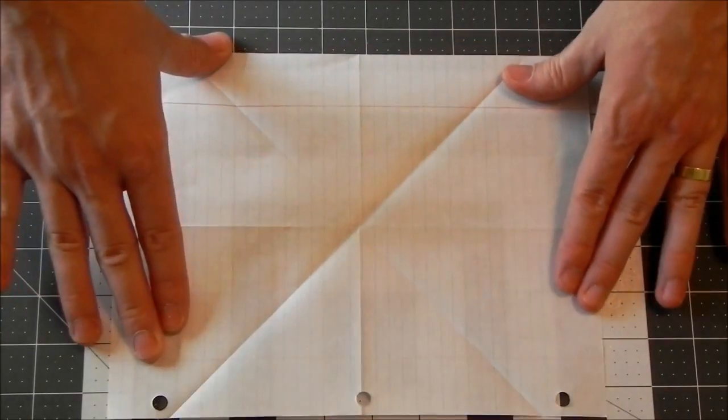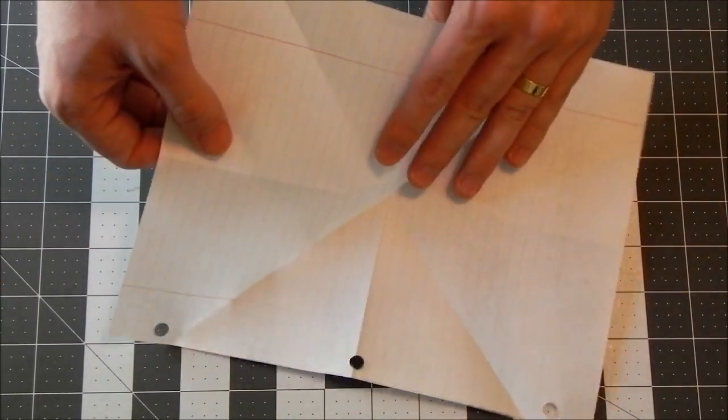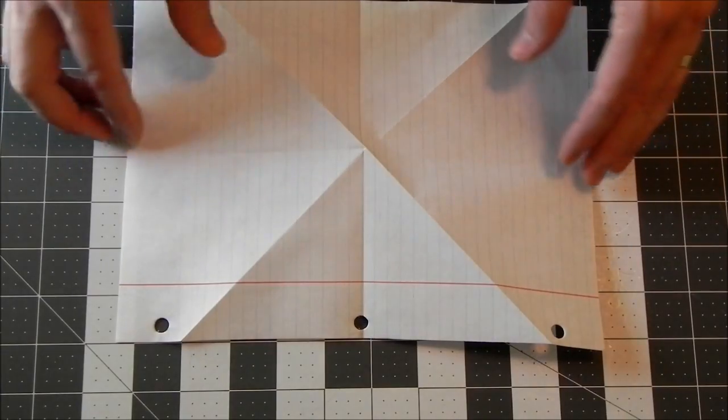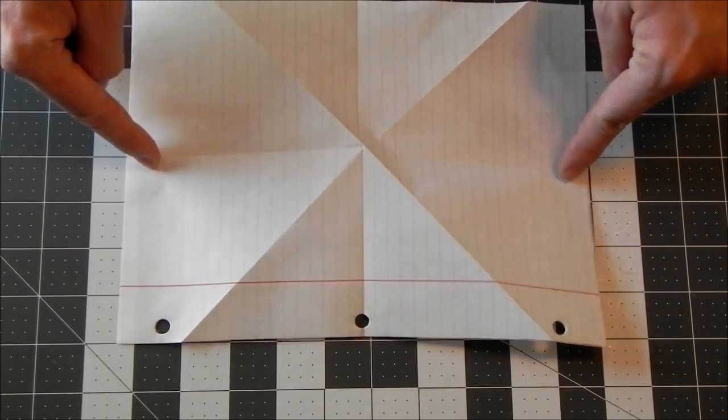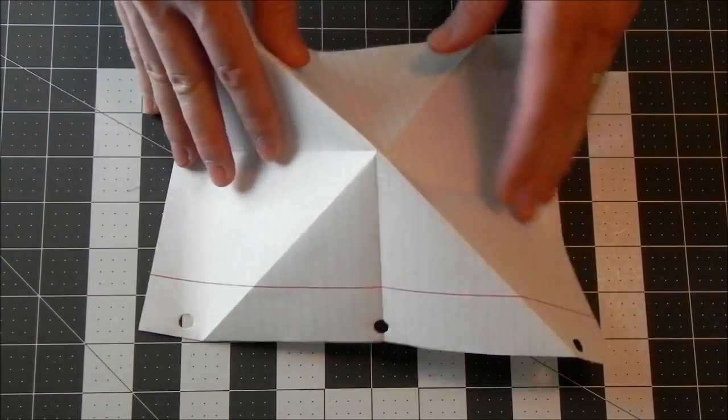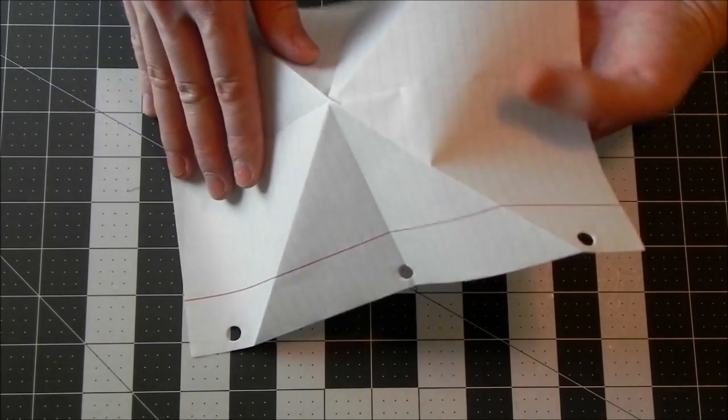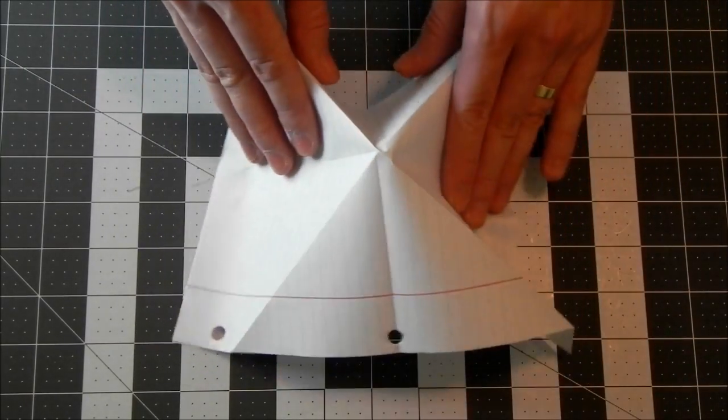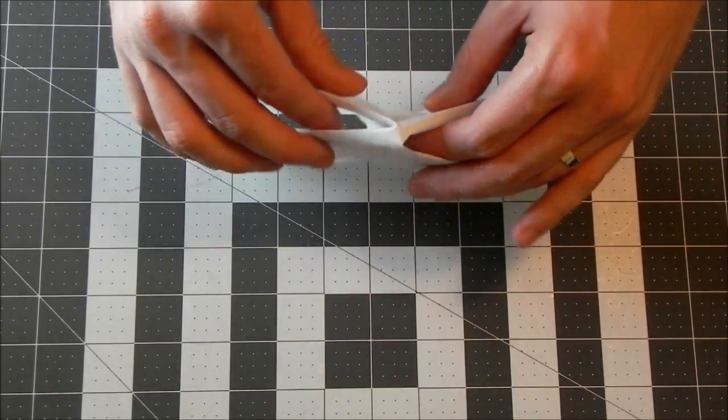And we'll unfold again. Now let's turn it back over. And what we're going to do is we're going to push in on the long edges. So just like this, you're going to see that the paper is going to want to collapse down